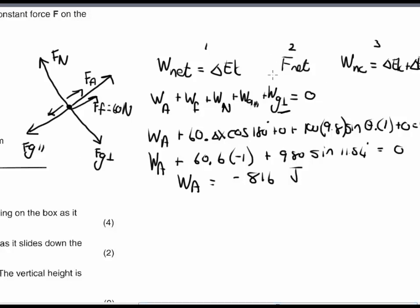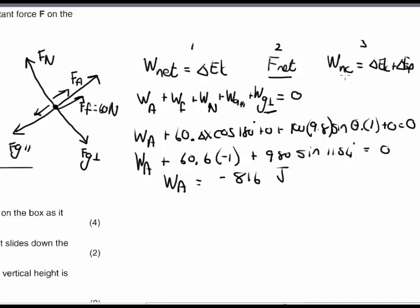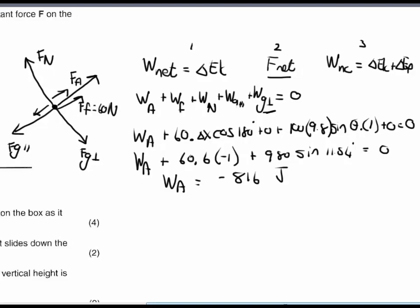As mentioned, you can also first calculate F_net, or calculate the work done by non-conservative forces. In this case, the work done by the man (W_FA) plus the work done by friction (W_FF) equals the change in EK plus the change in EP. The change in EK equals 0, and for the change in EP you use the height of 1.2 m to calculate your answer.